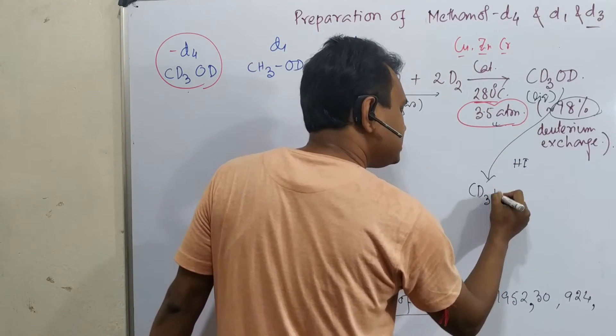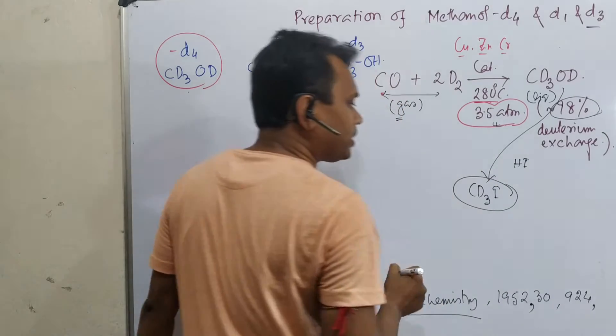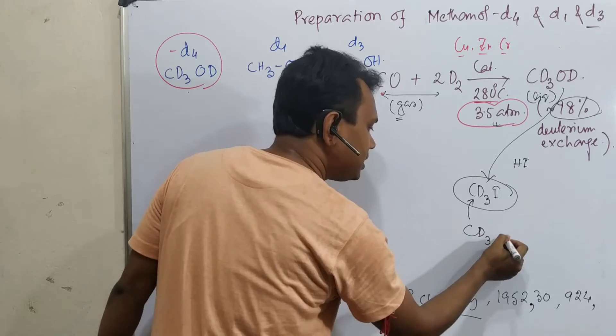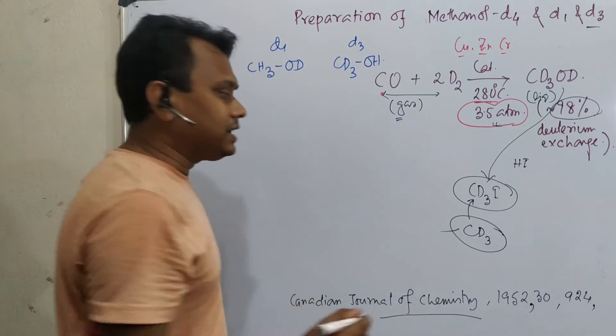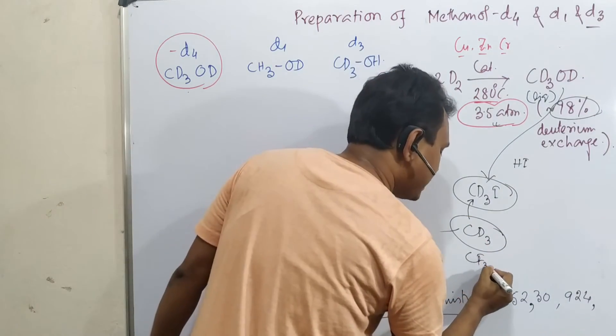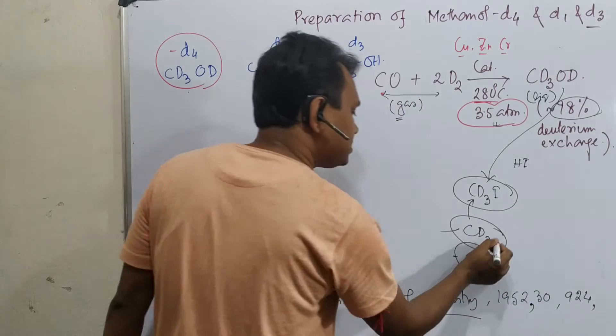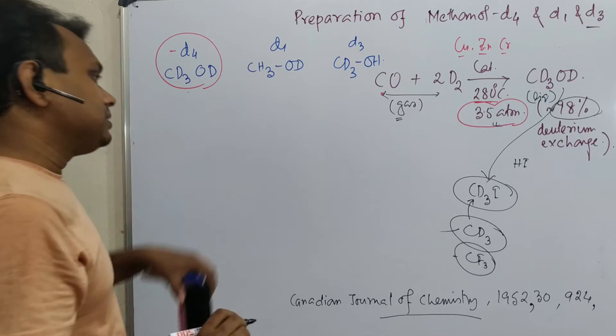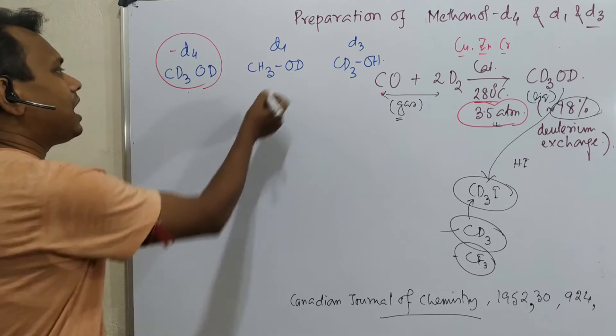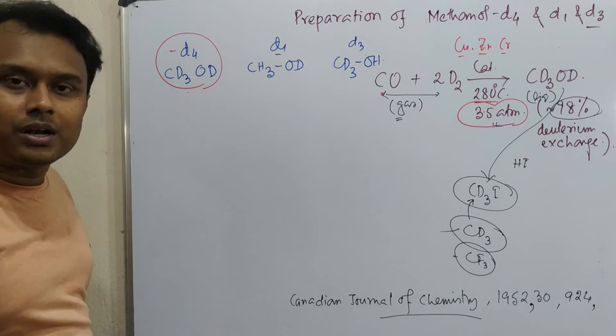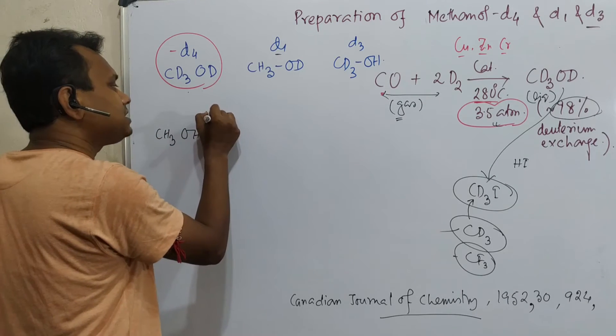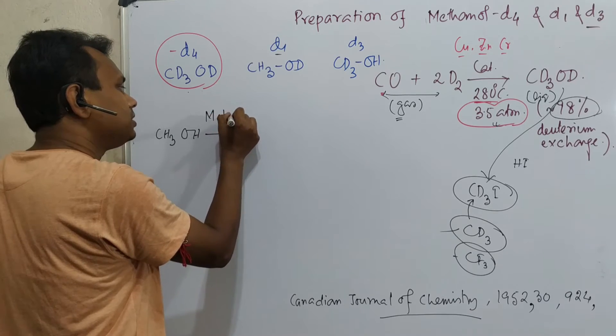And in this way you can produce a CD3 electrophilic center, means CD3 substitution. Like another thing you have observed that in organic chemistry, CF3 is a very interesting group. This CD3 is also very interesting group. So that is a different issue. Now, question how this could be prepared, methanol D1. So if you take simple methanol and if you react this with metallic sodium or lithium.